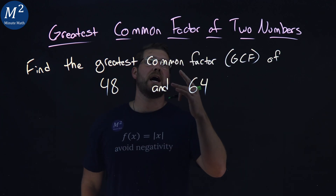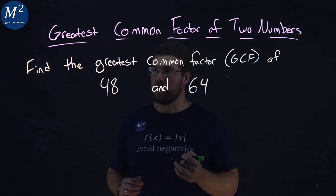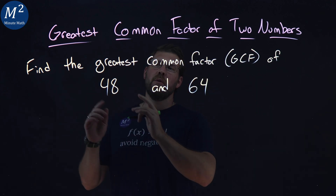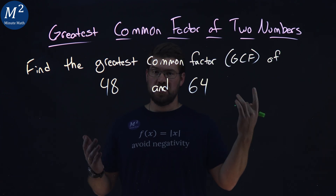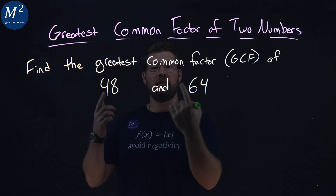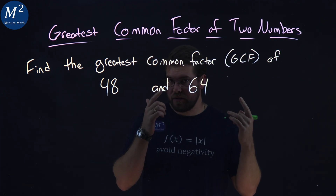Let's learn about the greatest common factor of two numbers. We want to find the greatest common factor, GCF, of 48 and 64.